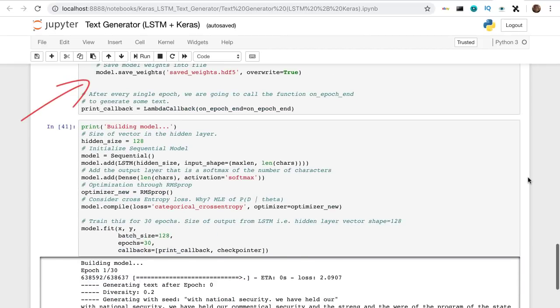I also save the weights of a model in an HDF5 file, so you can continue training where I leave off. Now we build our model, adding the LSTM cell with a 128-dimensional hidden vector.